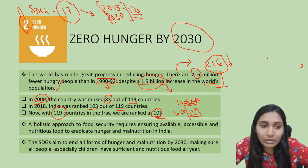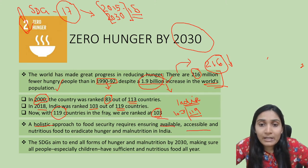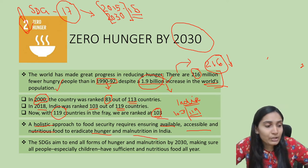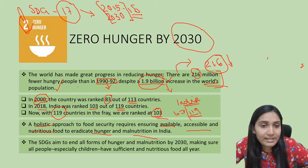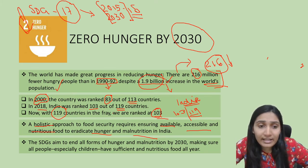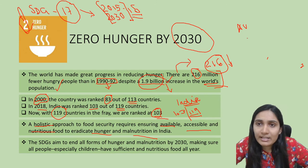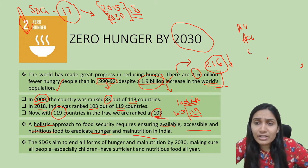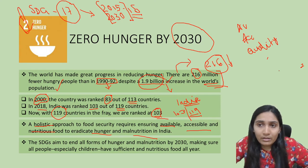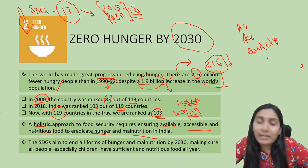A holistic approach to food security requires ensuring available, accessible, and nutritious food to eradicate hunger and malnutrition in India. We need to look at three things: first, availability of food commodities; second, accessibility of food commodities; and third, the quality of food — that is, nutrition — to eradicate hunger and malnutrition.